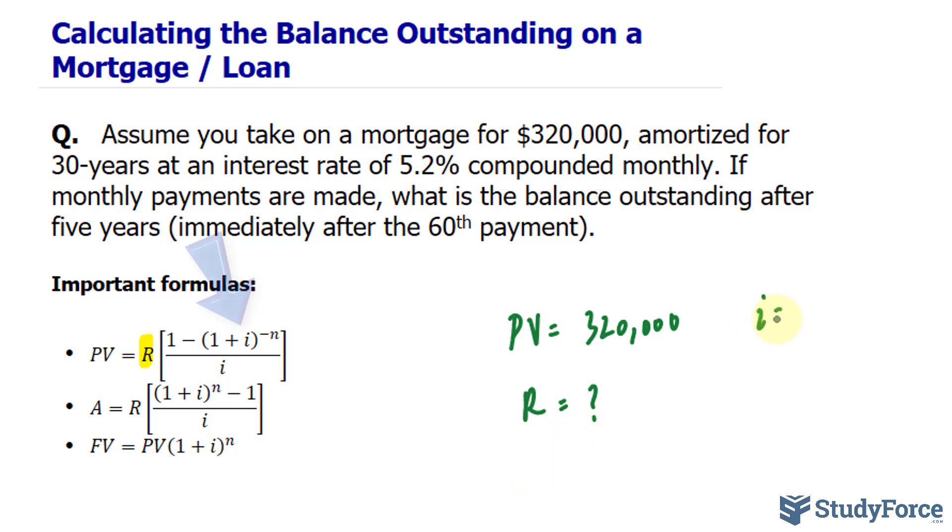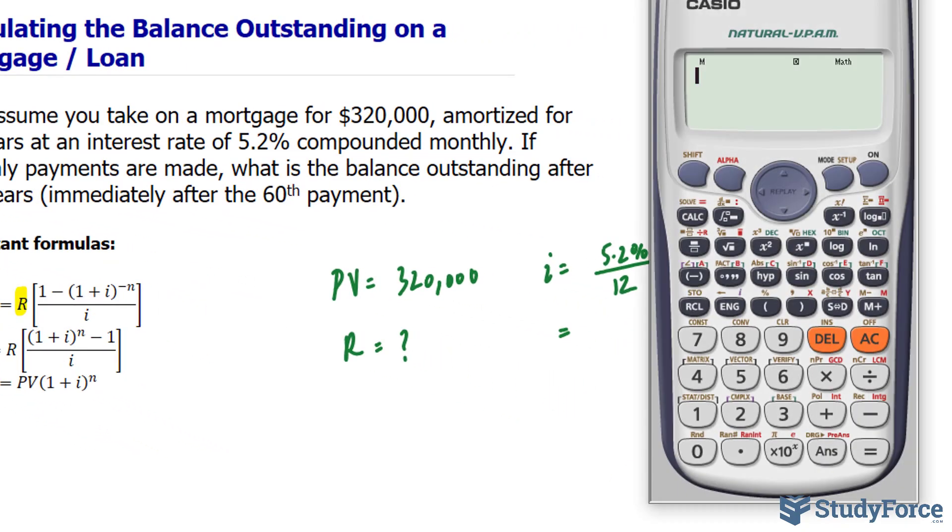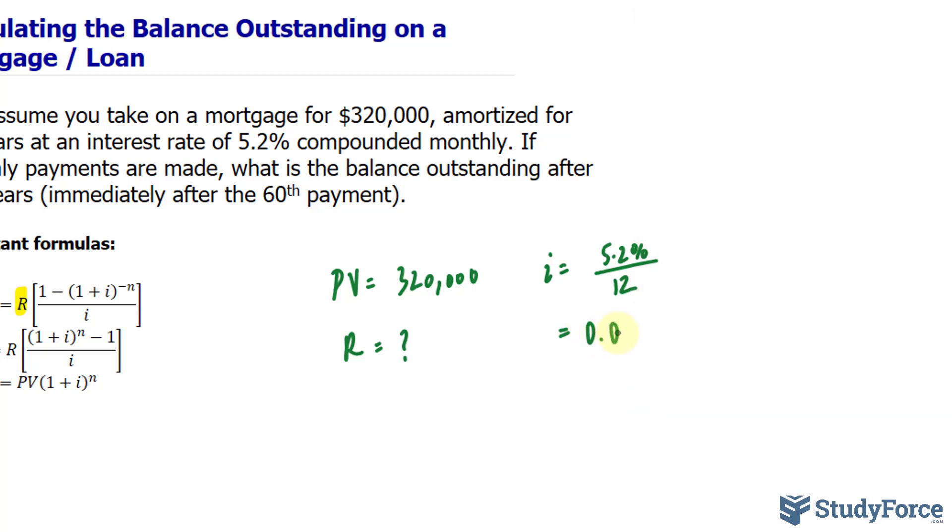Our interest rate is compounded monthly. So I'll take 5.2% and divide that by 12. So let's go ahead and do that. 5.2 divided by 12 makes 0.43 repeating percent per month. And you do have to divide this by 100% so that it becomes a decimal.